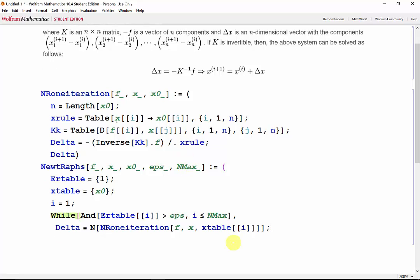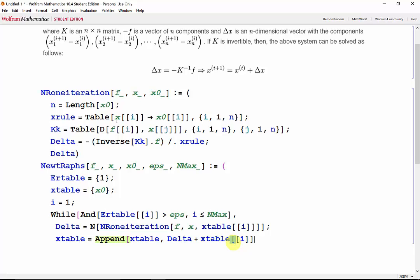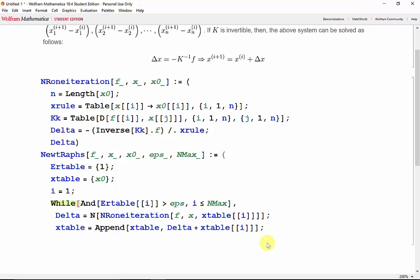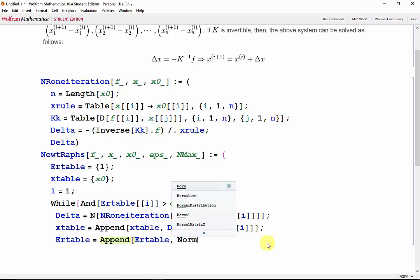Now that we have delta, we can append our new guesses into our x table. So x table will be appended with delta plus x table[i], just like our formula up here. Now we need to add a new error to our error table. We know from class that the error of the Newton-Raphson method is the norm of delta divided by the norm of the previous iteration. So error table will be appended with the norm of delta divided by the norm of x table[i].